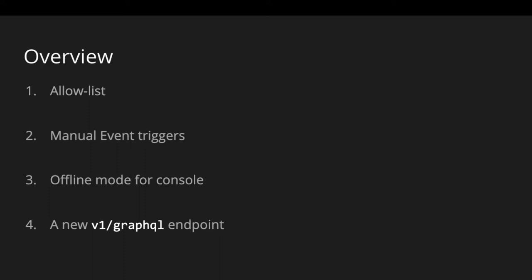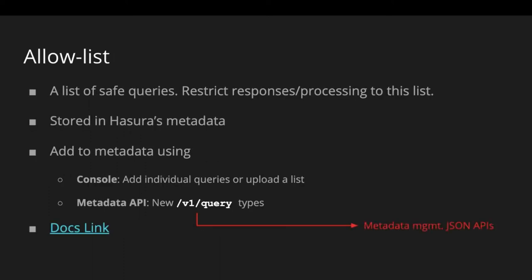Let's begin with the first one: Allow List. Allow List is a very commonly seen feature. It's a list of safe queries, and what it allows you to do is configure a web server to restrict responses or processing of queries to this particular list of safe queries only. GraphQL engine's Allow List works exactly like that.